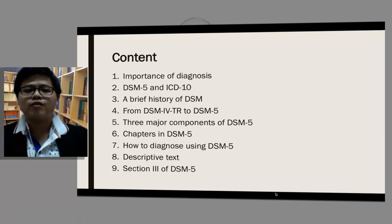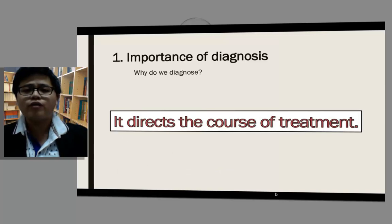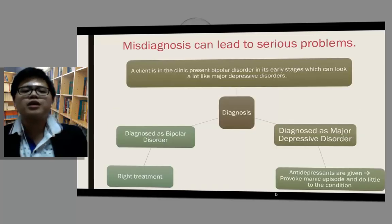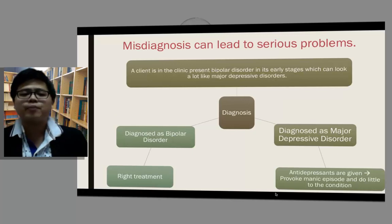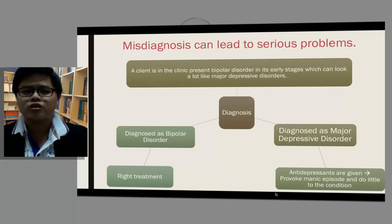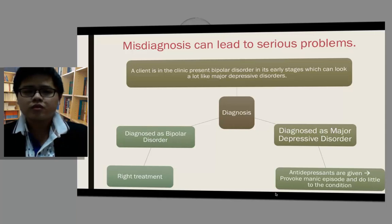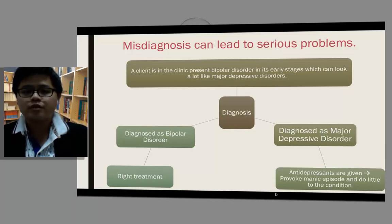Now let's look at the importance of diagnosis. Why do we diagnose? Because it directs the course of treatment. For example, let's imagine that a client in the clinic presents a bipolar disorder at its early stage, which can look a lot like a major depressive disorder. If the clinician makes the right diagnosis and diagnoses the client as living with bipolar disorder, it will lead to the right treatment.